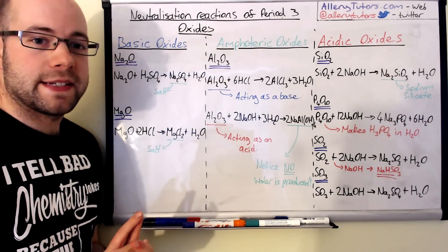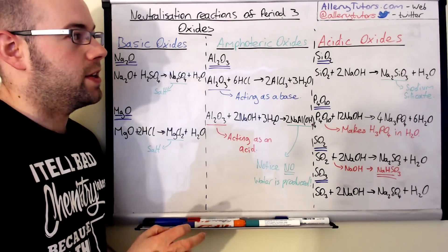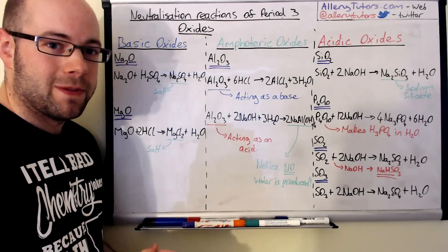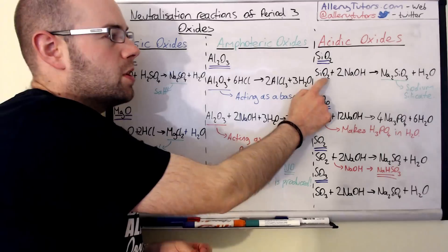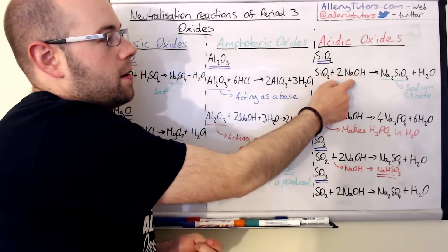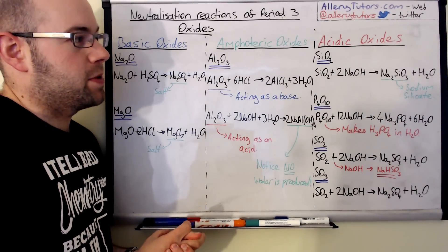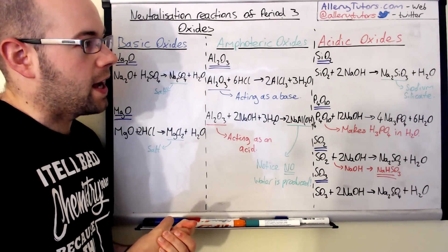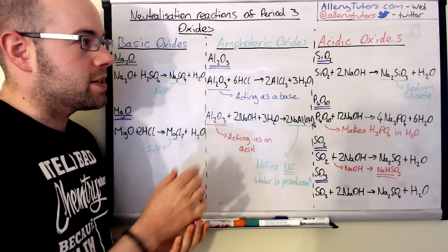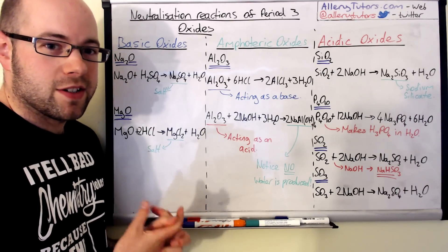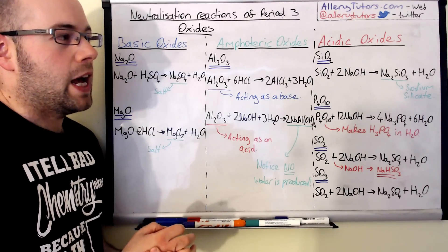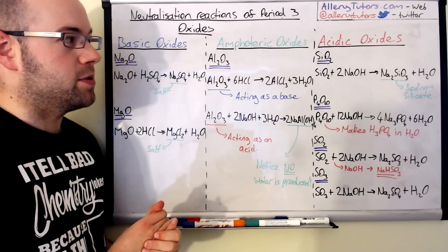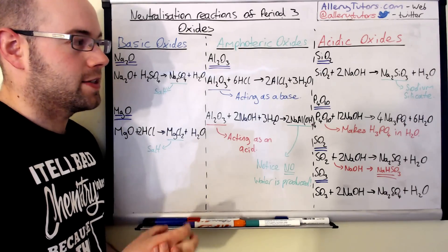Now looking at acidic oxides — these involve non-metals. Silicon dioxide forms an acidic oxide. So silicon dioxide plus a base, because an acid reacts with a base, will form a salt — in this case sodium silicate, Na₂SiO₃ — plus water. This is very similar to how calcium silicate is produced in a blast furnace, except you would use calcium hydroxide instead of sodium.